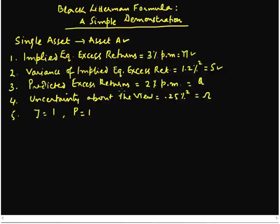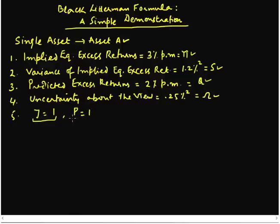We also have a view. We have predicted excess returns for this asset of 2% per month, which in Black-Litterman formula terms is equivalent to our Q. This has to be an absolute view because this is just one single asset — we have nothing else we are comparing it with. Here we have the uncertainty about our view, 0.25% squared, which in Black-Litterman formula terms is equivalent to our omega. We decided to use a value for tau, a scalar, equal to 1. Because we are dealing with just one asset, there is going to be no link matrix, so we are assuming the value of P, our link matrix, to be equal to 1.